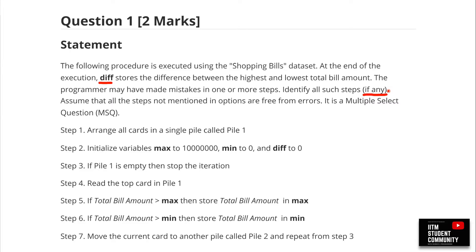It says: assume that all steps not mentioned in the options are free from errors. If you don't see an option and feel a particular step is erroneous, don't worry — it's probably right. Also note this is a multiple select question, so there may be more than one correct answer. Go through all options before moving on.